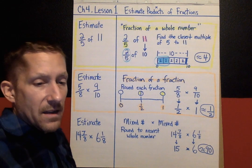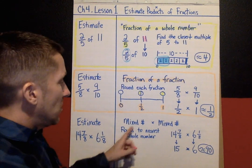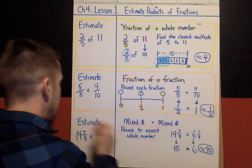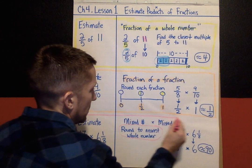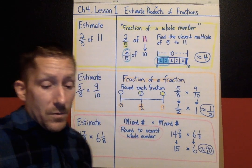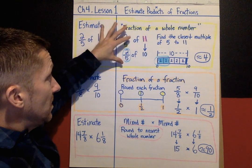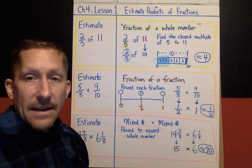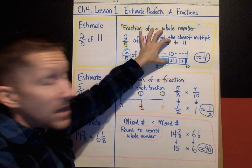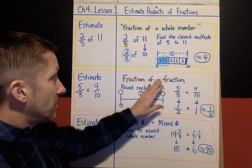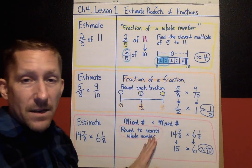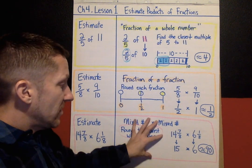The last example gets a pink box. For a mixed number times a mixed number, your strategy is to round to the nearest whole number and then multiply. To recap all three strategies: yellow is fraction of a whole number; orange is fraction times a fraction — round each to zero, a half, or one; and pink is mixed number times a mixed number — round to the nearest whole number and multiply.